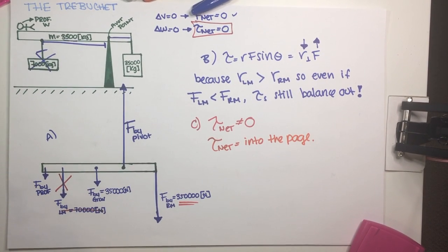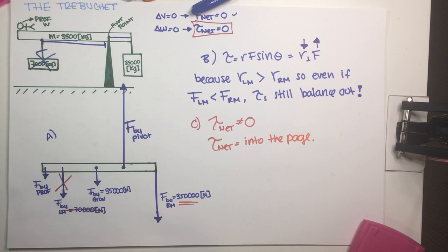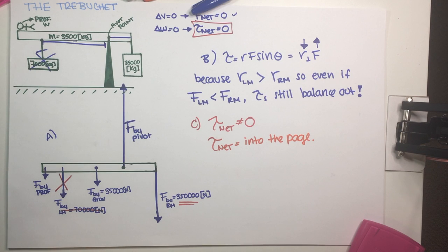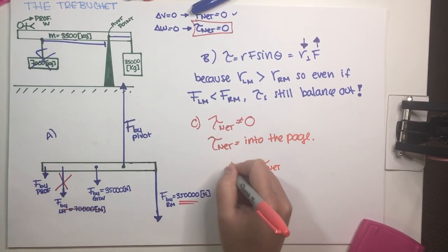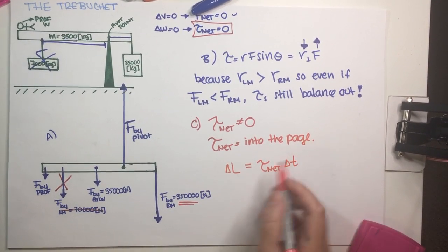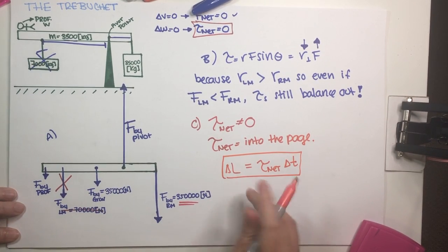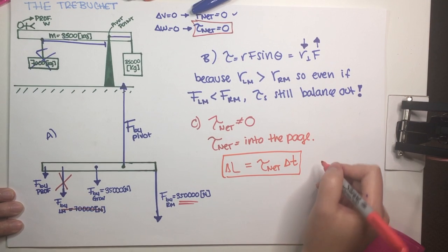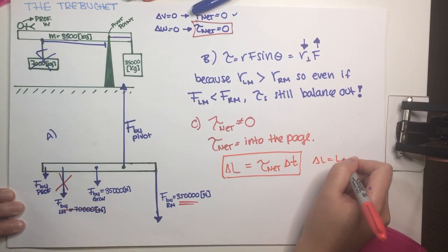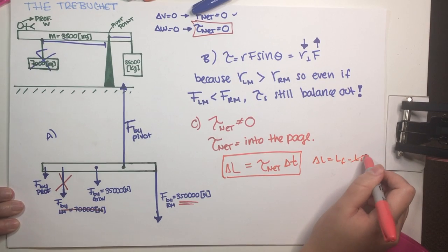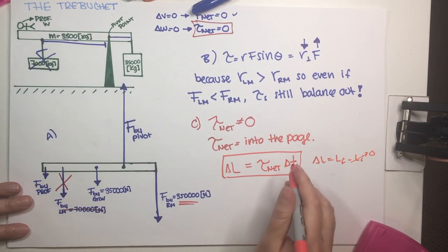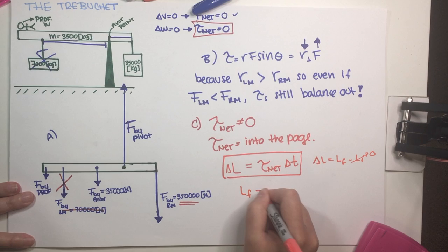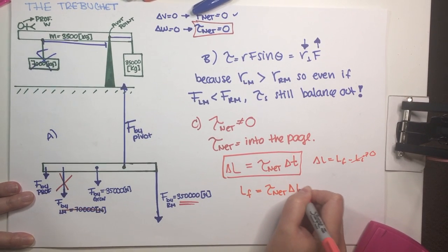But now the question is asking us, what is the direction of the angular momentum vector, not the net torque vector. So let's just go ahead and review our equations. So this is an equation that we know. Delta L is equal to net torque delta T, and delta L of course being final minus initial. In this case, initial is equal to zero because nothing was moving and then suddenly this breaks and something happens.